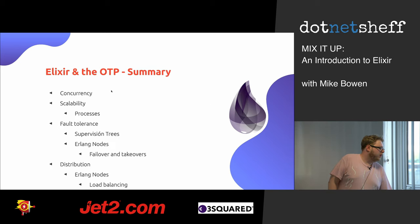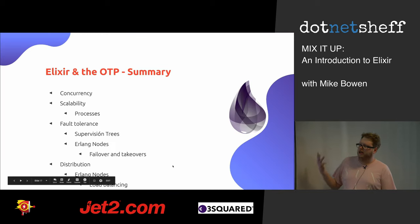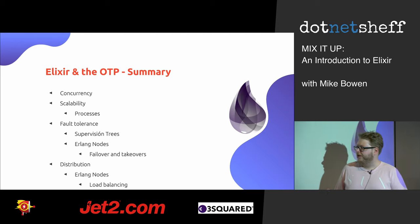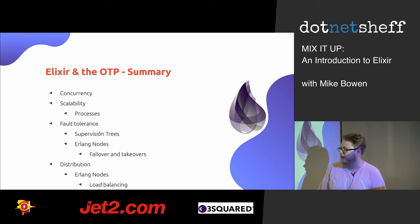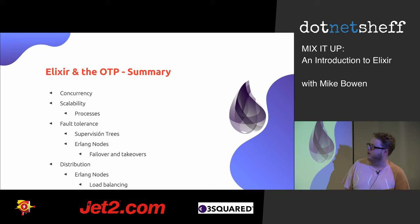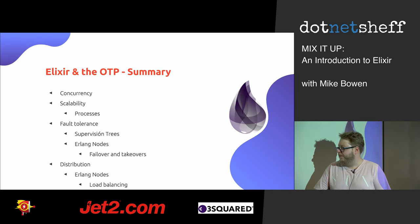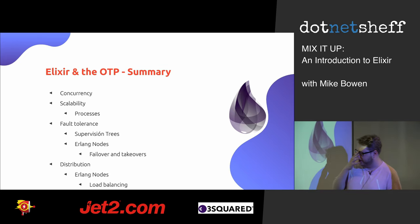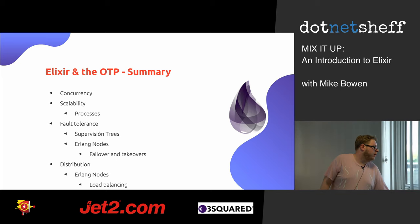To summarize: we're interested in applications that are concurrent, scale well, are fault tolerant, and can be distributed. Elixir and OTP provide that: we have processes for concurrency and scalability, supervision trees for fault tolerance, and Erlang nodes for failover, takeover, and distribution.